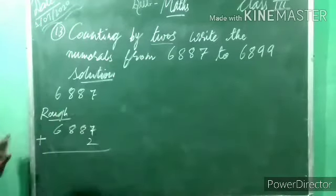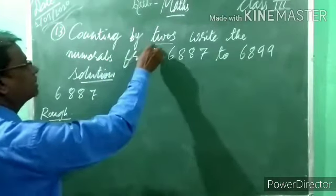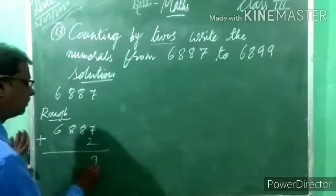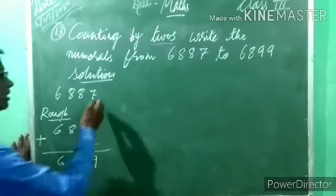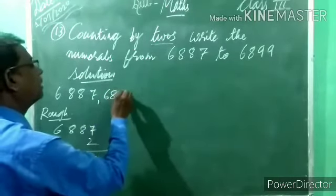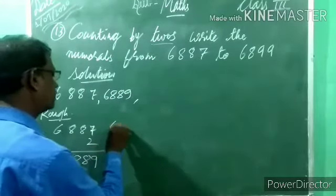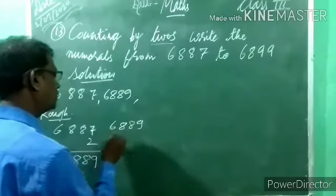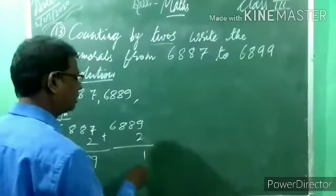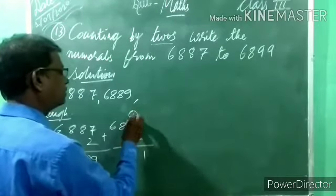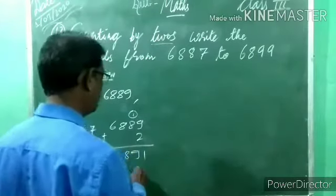So add 2 to 6,887. Why did we add 2? Because counting by 2 is given, that's why. Now, 7 plus 2 is 9, then 8, 8, 6 — so 6,889. Write here 6,889. Do rough work and you will get the answer. Then in 6,889 again add 2. Now, 9 plus 2 is 11 — carry 1. 8 plus 1 is 9, then 8, 6. So 6,891.